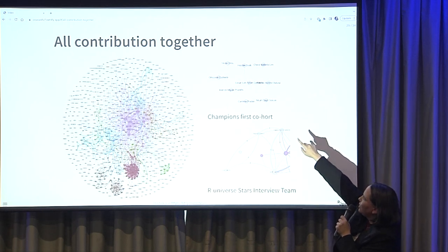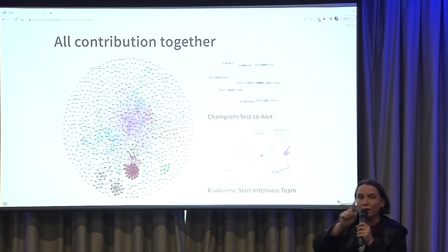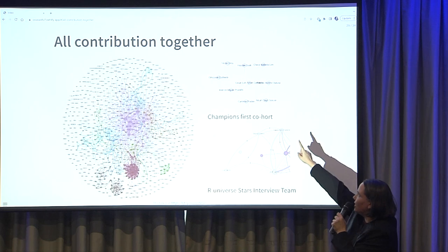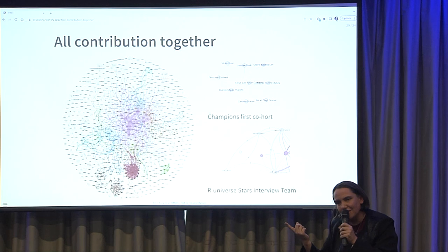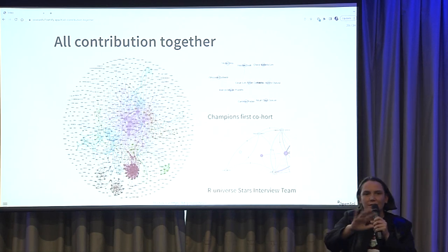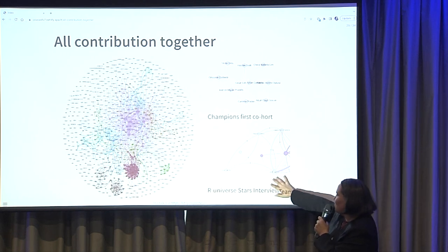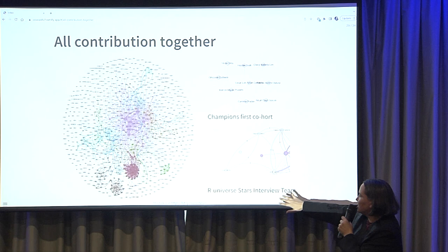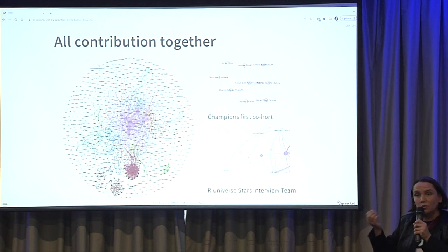For example, one cluster there is our champions first cohort. So if I saw any of you in that cluster, I would know — because you have a connection with the people from the champions program. Similarly, I can identify our Universe star interview team. So I can start to know who works with whom, and who I need to try to connect with whom.